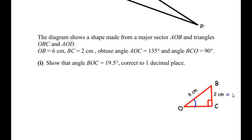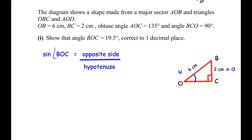Since this is a right-angle triangle, the angle of concern is angle O. The side opposite to angle O is BC, so this becomes the opposite side, and the side opposite the 90 degrees is always the hypotenuse. Since we have the opposite side and the hypotenuse, we can use the sine trigonometric ratio: sine of angle BOC equals opposite over hypotenuse.